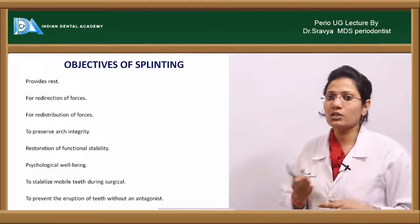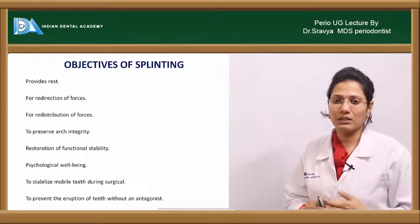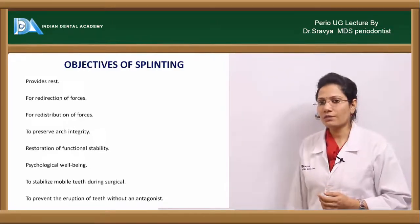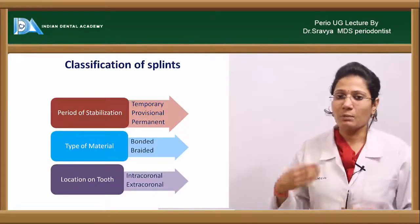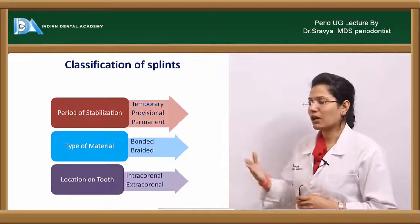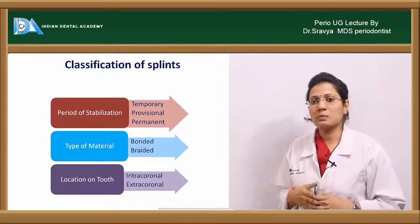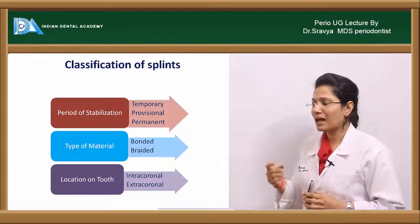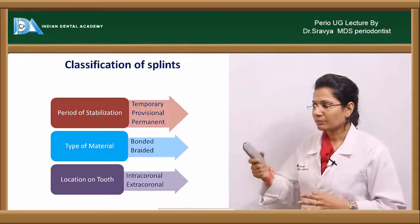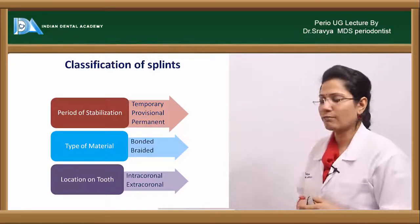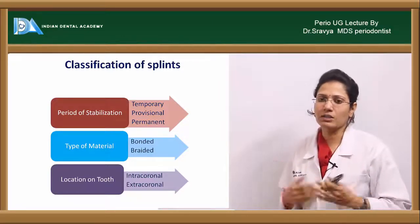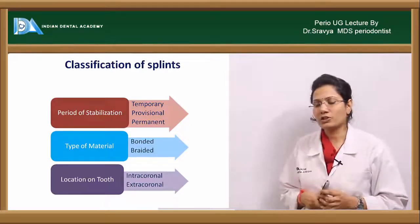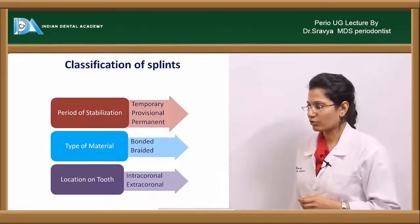Splinting can stabilize a mobile tooth before surgery to prevent eruption without an antagonist. Classification of splints by time period includes temporary splints (less than six months), provisional splints (at least six months), and permanent splints (greater than six months). By material type, you have bonded splints such as composite resins, and braided splints using stainless steel wire. By location, there are intracoronal splints and extracoronal splints.